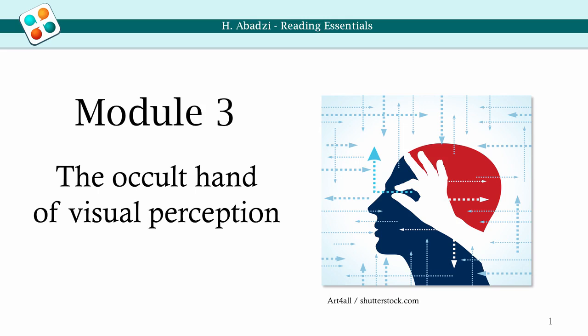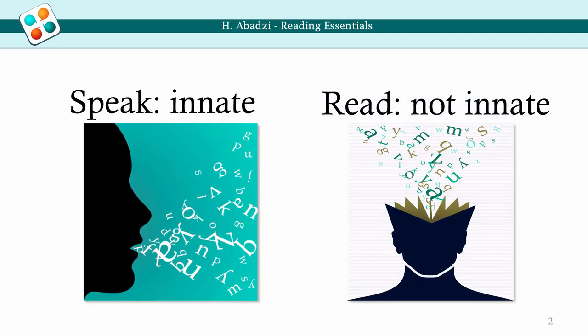Module 3: The Occult Hand of Visual Perception. Reading is not innate. It arose only a few thousand years ago, and relies on brain circuits used to find small objects or recognize faces. This module discusses the functions involved in visual perception.